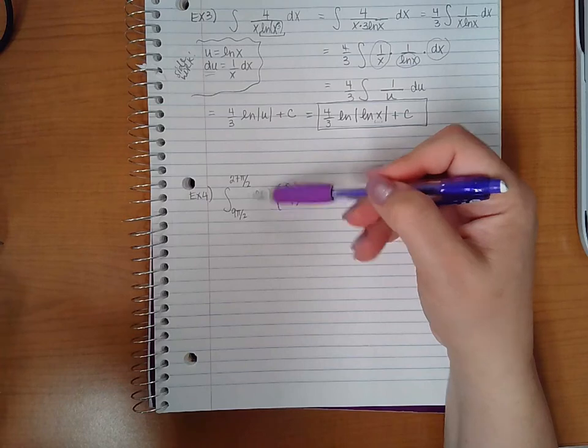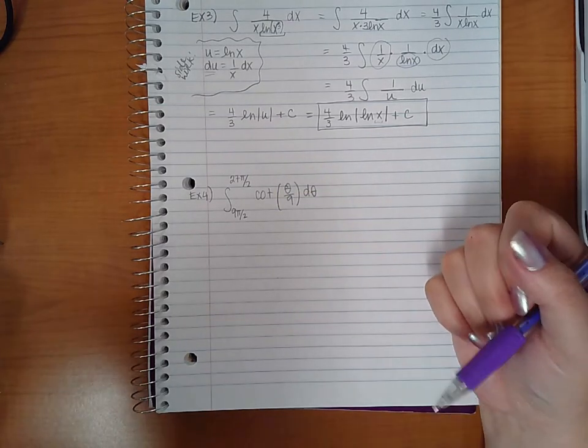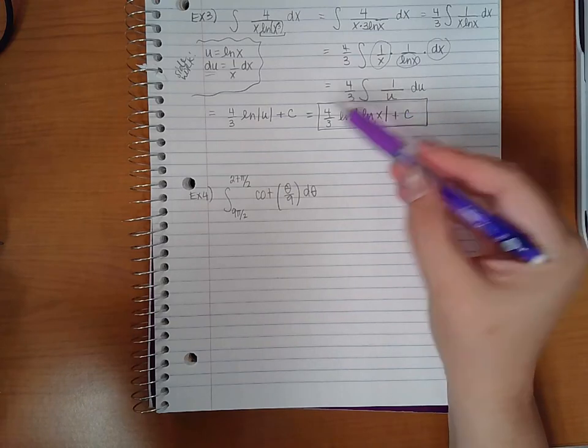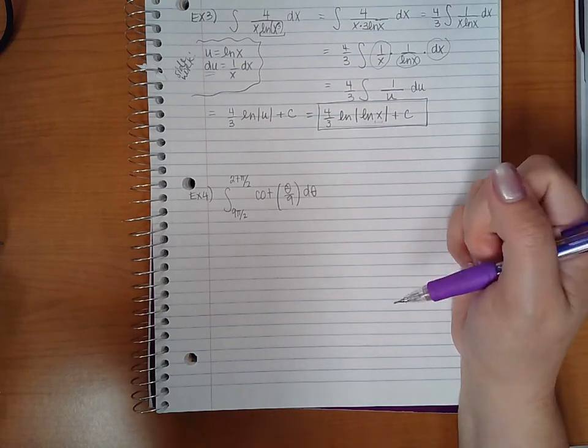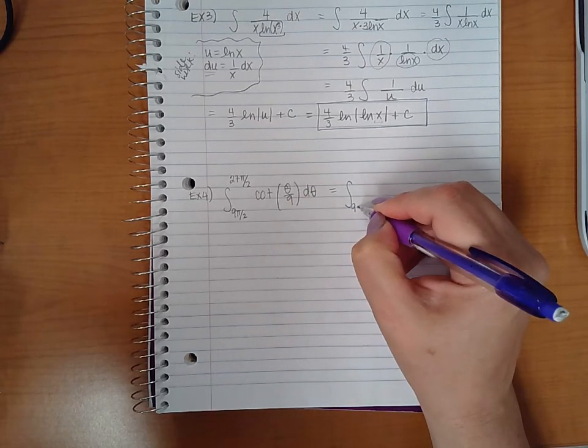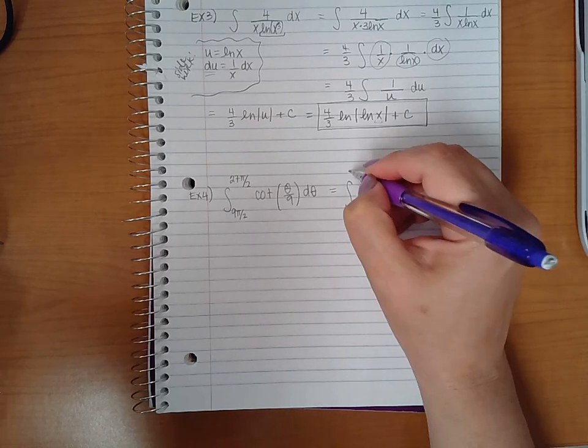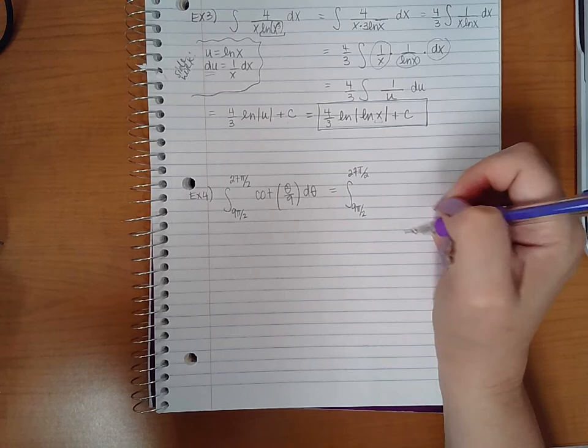Which means I have bounds that I'm going to have to use at the end of the problem. So instead of putting plus c, I'm going to remind myself I have to evaluate the expression. Let's write cotangent as a fraction.